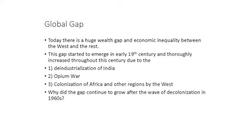India was still producing high-quality textiles that were in demand. So when Great Britain colonized India in the early 19th century, one of the first things it did was to de-industrialize India and shut down most of the textile factories in order to eliminate a major competitive player in the textile market. After de-industrializing this huge country, Britain turned it into an agriculture-based economy, forcing Indians to cultivate poppy — the raw material of opium.